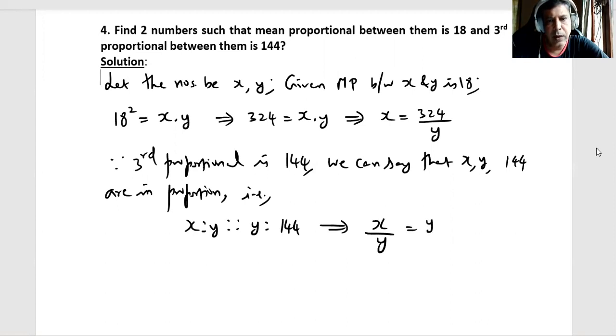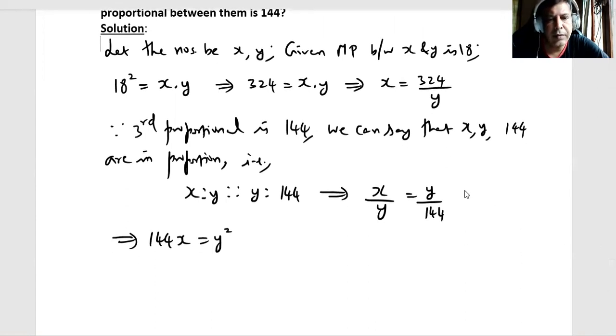Or we can write it as x by y is equal to y by 144, or we can say 144 times x is equal to y square. Further we can write this as, we can replace x with 324 by y, so 144 into 324 divided by y is equal to y square, or we can say 144 into 324.